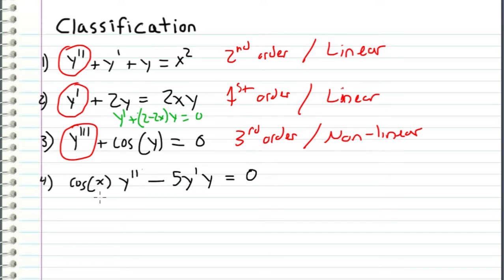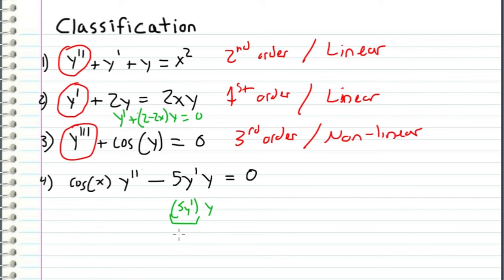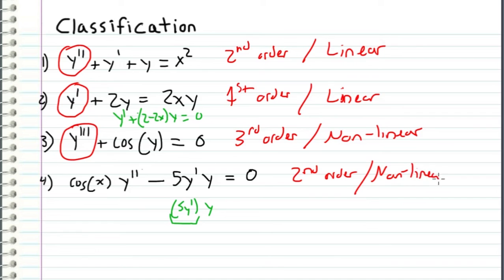In the fourth example, we see cosine again, but this time it is a function of x acting as a coefficient of y double prime — so that's okay. But right here we have five y prime times y, which is like saying five y prime is a coefficient for y. This is not a function of x only — it includes our unknown function y. Therefore, we can conclude that this is a second order nonlinear differential equation.